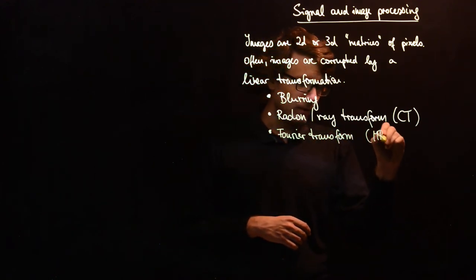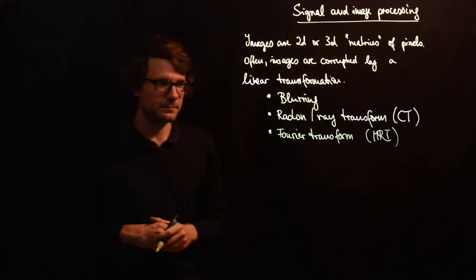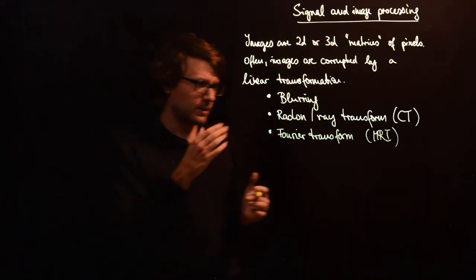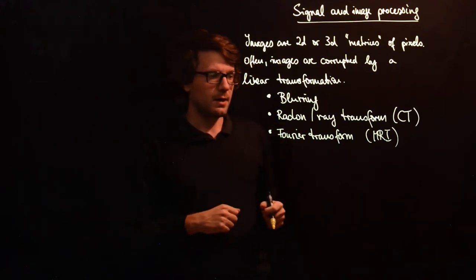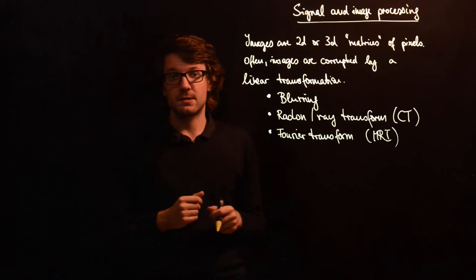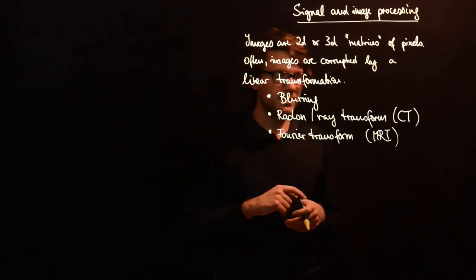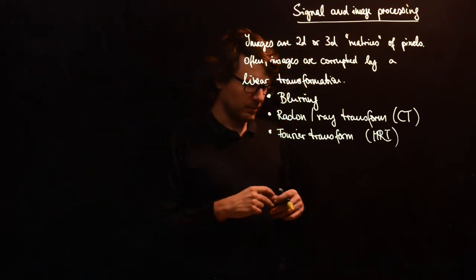Or you can have a Fourier transform. This is the case for MRI. Usually in MRI you have a few sampling points, or at least fewer sampling points than the desired resolution for your image.